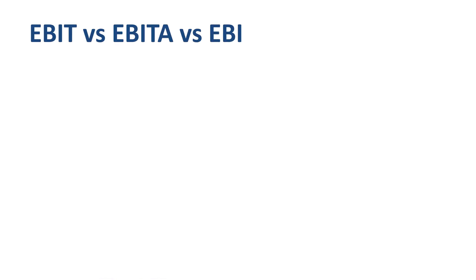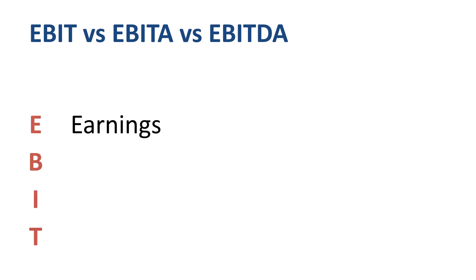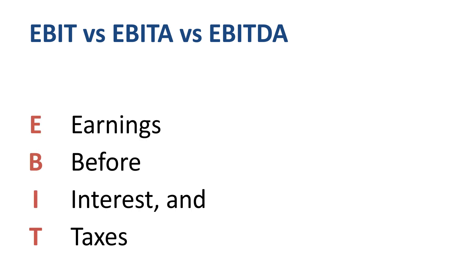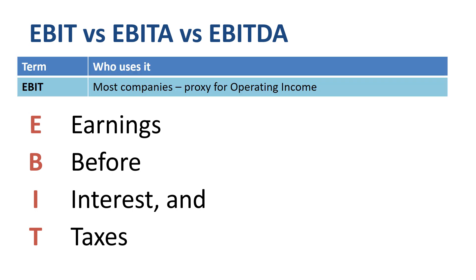A lot of companies, and a lot of financial analysts, talk about EBIT — earnings before interest and taxes. EBIT is a proxy for the more official GAAP term called operating income. If a firm does not have non-operating income and non-operating expenses, then operating income is the same as EBIT.